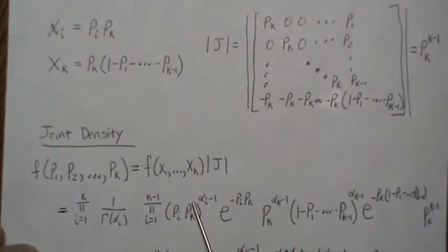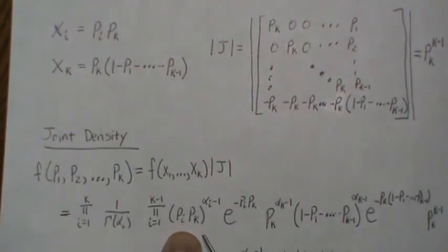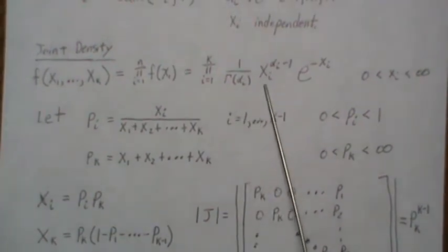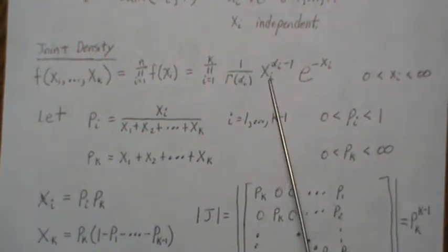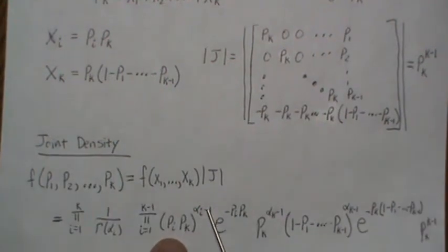So when we plug in X1, X1 is P1 times PK, so if we look at the original distribution we plug in that right here and it's raised to the alpha I minus 1 and that's what we get.